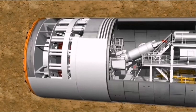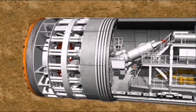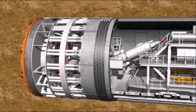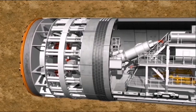The end of the shield, the so-called tail skin, is equipped with a circular tail skin sealing. This provides a seal between the sealed structure of the shield machine and the segment ring.